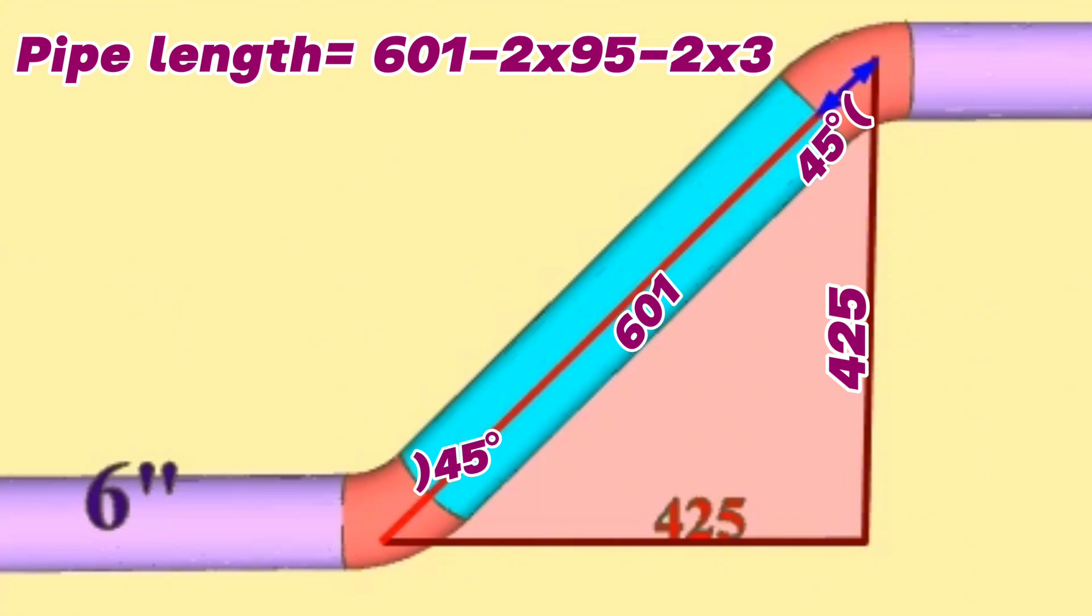Finally, we calculated and found that the length of the 6-inch blue pipe in this pipeline is 405 millimeters.